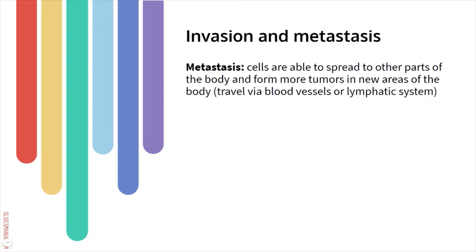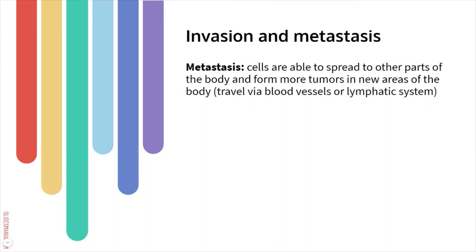The sixth hallmark is invasion and metastasis. Metastasis is when cancer cells spread to a whole new different part of the body and form tumors there, typically traveling through blood vessels or the lymphatic system. To recap: a benign tumor stays localized, a malignant tumor invades surrounding tissue, and a metastatic tumor goes one step further — cells break off and travel to an entirely different section of the body, such as spreading from the kidney to the lungs.